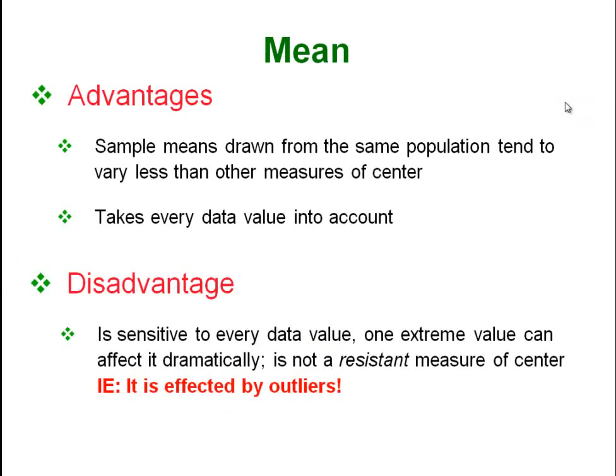The advantage of the mean is that it gives us a really good overall snapshot of the entire set of data because it takes every single piece of data into account. It is very widely known. People understand it. Everybody knows what an average is. But the big disadvantage of the mean is that it is affected by outliers. If you have a really large set of data one or two outliers isn't going to make a really big difference.